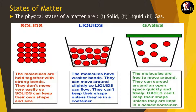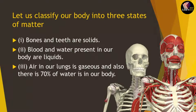Moving to the gaseous state: the molecules are free to move wherever they want — they can spread around an open space quickly and freely. Gases cannot keep their shape unless kept inside a sealed container. To summarize the three states: solids have very strong bonds and a fixed arrangement; liquids have weaker bonds than solids but stronger than gases; and gases are very free to move, with the weakest bonds of all.